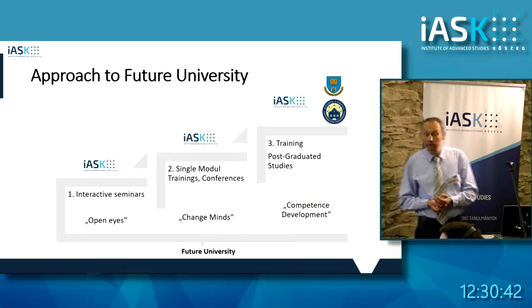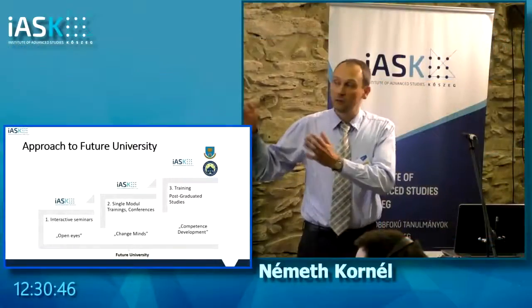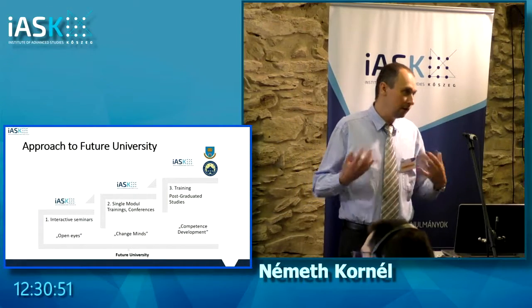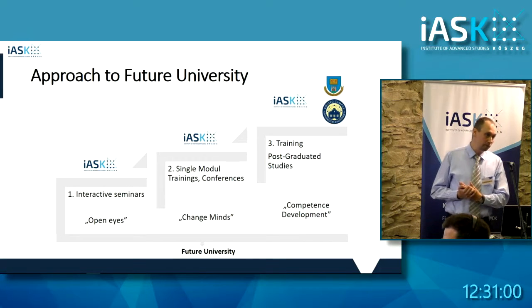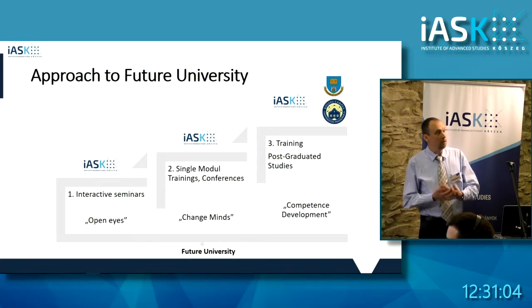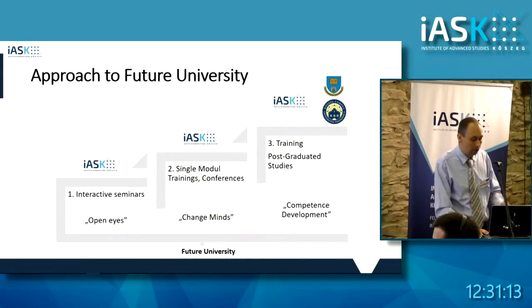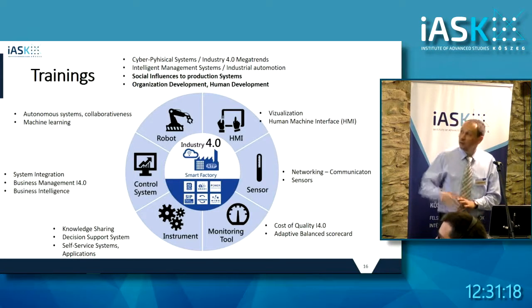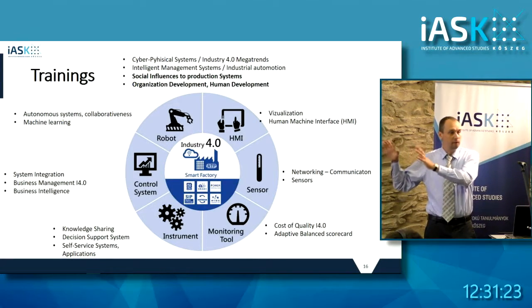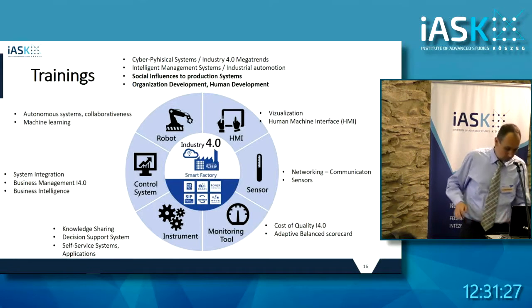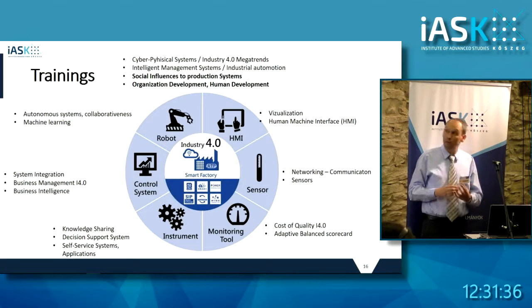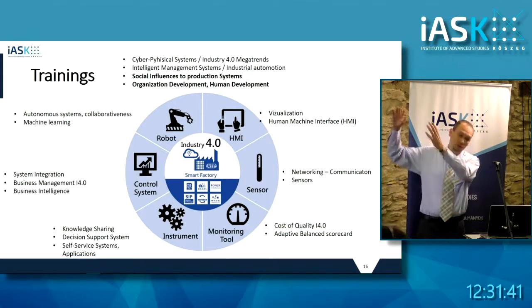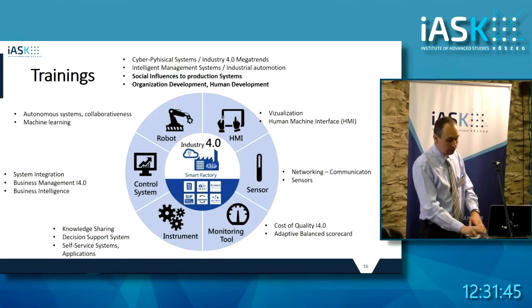The approach for the future university has three phases we want to implement. First, you just have to open the eyes — they must be aware of the changes and the correlations. The second, which is a step forward, is that in single modules, trainings, and conferences, we have to start achieving a change in mindset. And when we've achieved that, then the audience is ready for competency development for these new modules. This is the classical Industry 4.0 model, and these are our visions for the modules that fit. As you can see in bold letters, we want to highlight that these are aggregated education modules including sociology, economy, and expanded technological competencies.